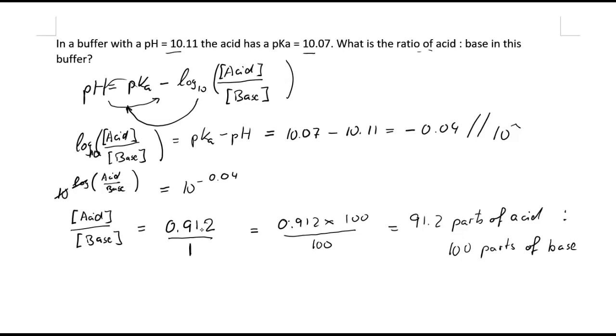And at the beginning, we said we need more of the base than the acid because our pH is larger than the pKa value. And that is what we see here. We need 91.2 parts of acid for every 100 parts of base. So we need more base than acid. So we can be fairly confident that our calculation was correct. I hope this makes sense. And thank you very much for watching.